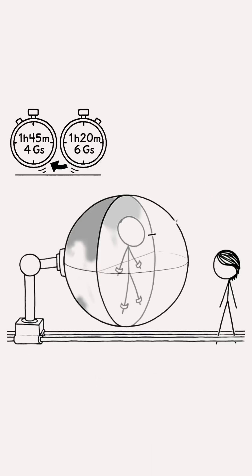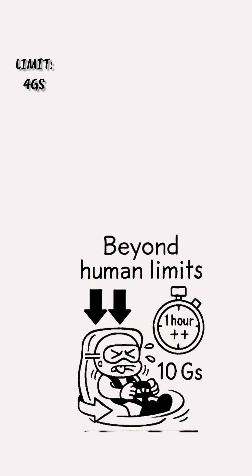To keep our driver alive, we'll need to swivel them around so they're always being pressed against their back. If limited to 4 g's in this way, our driver will finish the course in a little under an hour and 45 minutes.